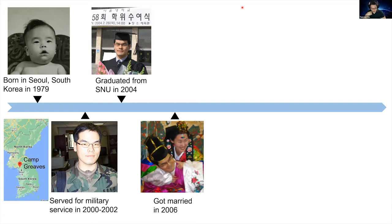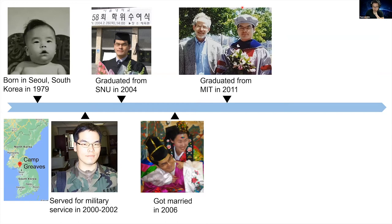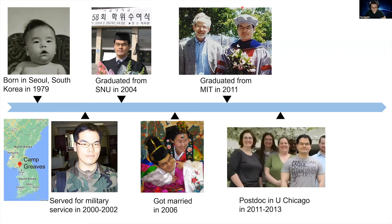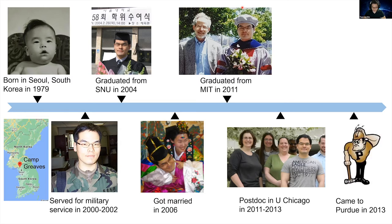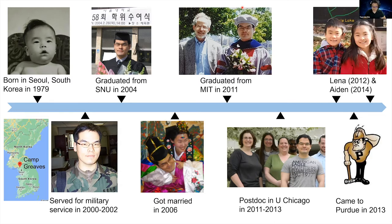I got married with my beautiful wife — my wife gave me specific instruction to say 'beautiful wife,' just kidding. I came to Boston in 2005 to pursue graduate study at MIT and graduated in 2011 in mechanical engineering. After that, I spent about three years at the University of Chicago as a postdoc. Then I joined Purdue as a faculty member in 2013, and in the meantime I had two lovely children, Lena and Aiden, in 2012 and 2014.